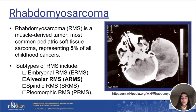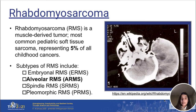So to begin, what is rhabdomyosarcoma? Rhabdomyosarcoma is a muscle-derived tumor. It is the most common pediatric soft tissue sarcoma, and it represents about 5% of all childhood cancers. The subtypes of RMS include embryonal RMS, pleomorphic RMS, spindle RMS, and alveolar RMS. Our main focus throughout this presentation will be on alveolar RMS.